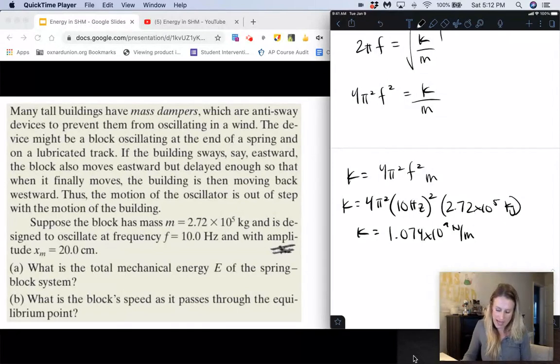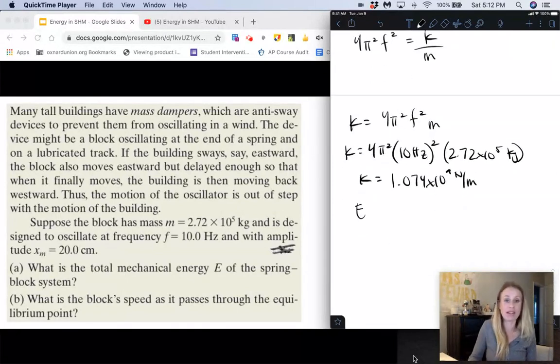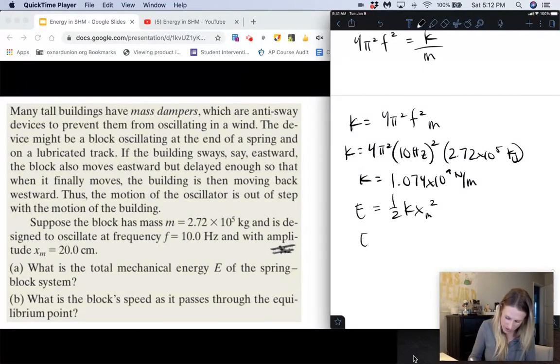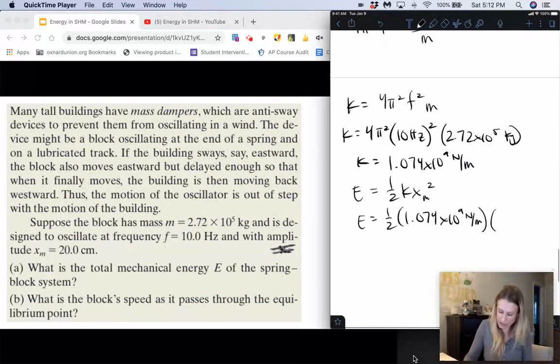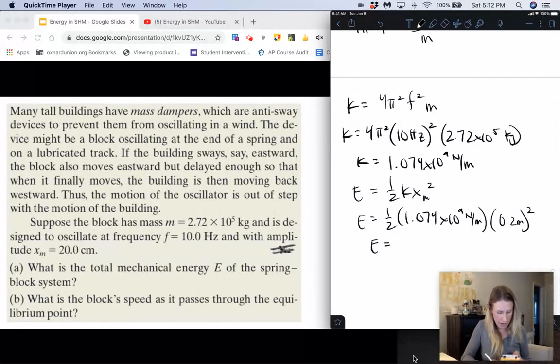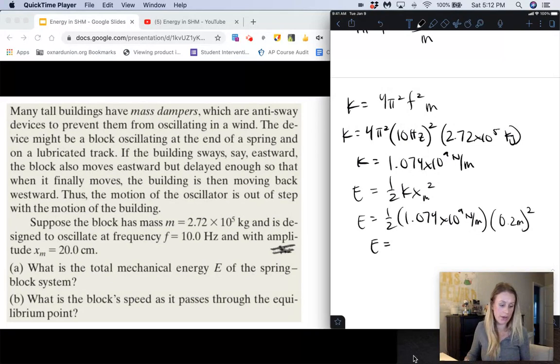So that's our spring constant k, and then of course the whole purpose of letter a is to find the total energy, which is going to be 1/2 times k x_max squared. So total energy of the system is going to be equal to 1/2 times 1.074 times 10 to the 9th newtons per meter times x_maximum, which was 20 centimeters or 0.2 meters squared. So we end up getting for energy about 2.15 times 10 to the 7th joules. So there's our answer for a.